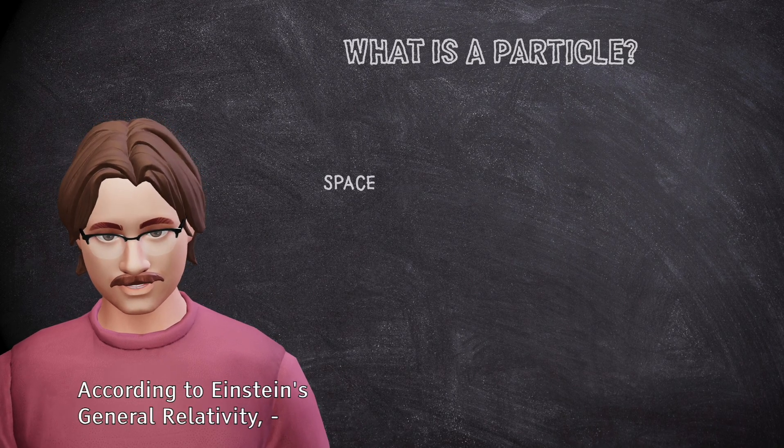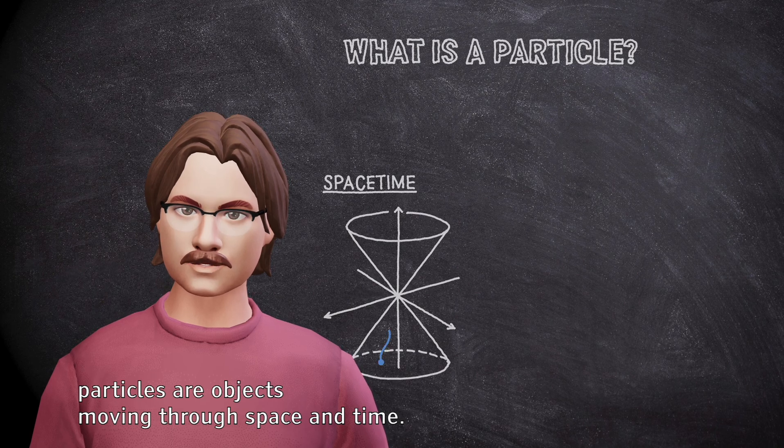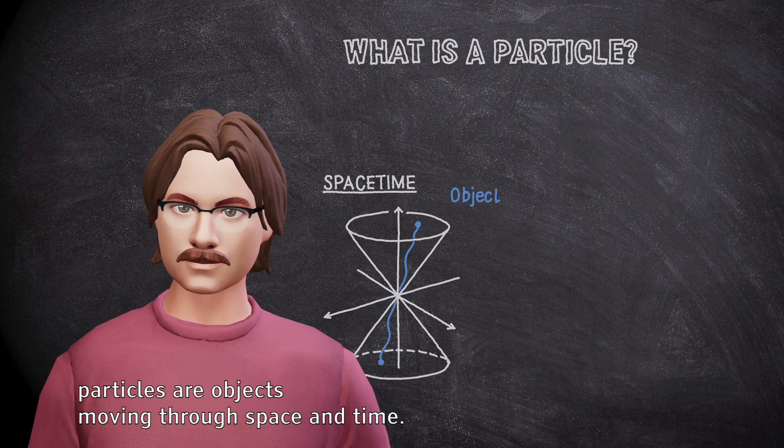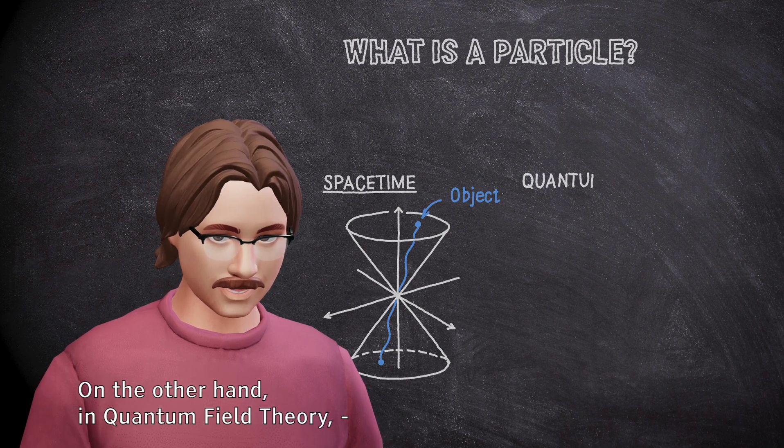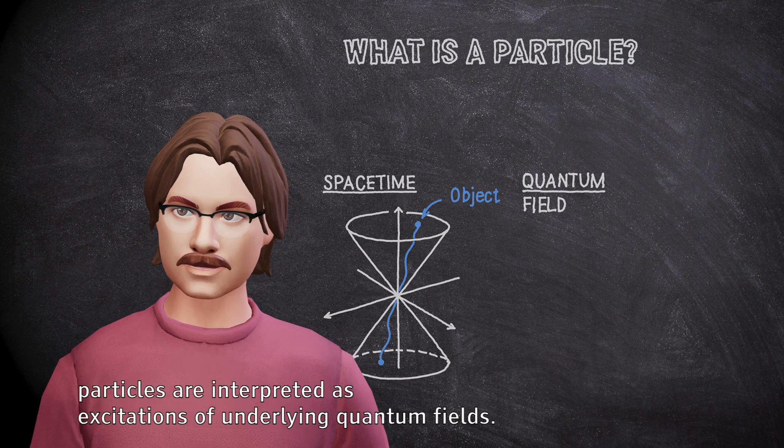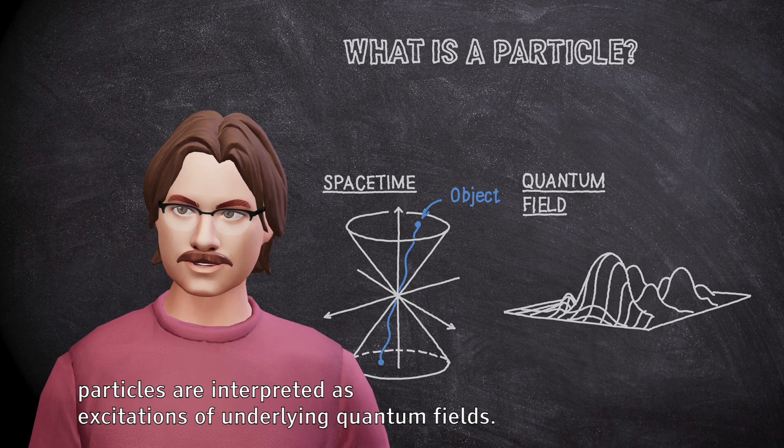According to Einstein's general relativity, particles are objects moving through space and time. On the other hand, in quantum field theory, particles are interpreted as excitations of underlying quantum fields.